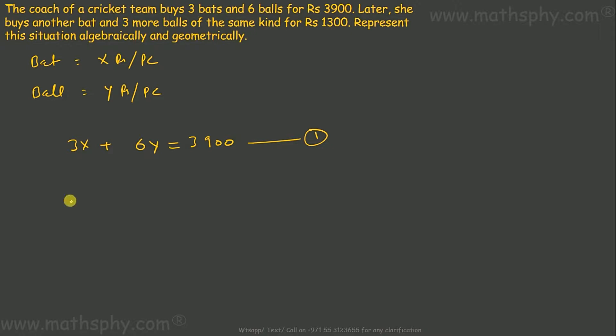Second equation it says, later she buys another bat, one more bat, plus 3 more balls, 3 balls. x and y, x rupees per piece, y rupees per piece, and pays 1300. Second equation.